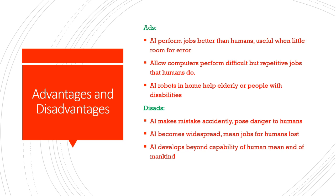There are different advantages and disadvantages you need to know about A.I. The advantages are that A.I. can perform jobs better than humans, and this is useful whenever there's little room for error. This is not always the case, but more often than not A.I. will do it better than a human just because it's a computer doing it. Although human error is sometimes needed, and humans can do a lot of jobs better than A.I. as well. Another advantage is that you can allow computers to perform difficult but repetitive jobs that humans do, taking away the mundaneness of doing the job.